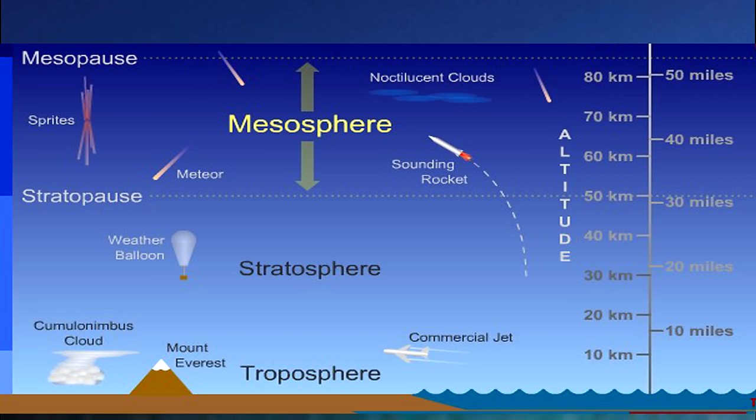The mesosphere extends from the stratosphere to around 84 kilometers. It is the layer where most meteors burn up upon entry into the atmosphere.